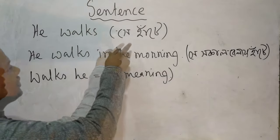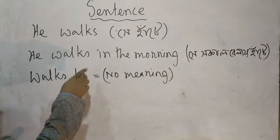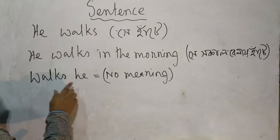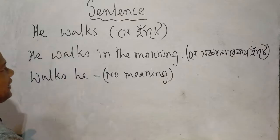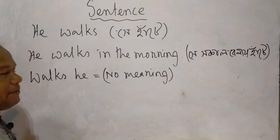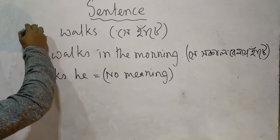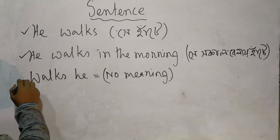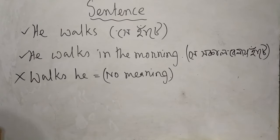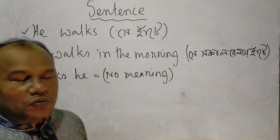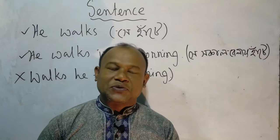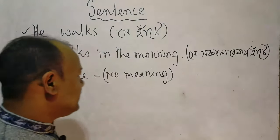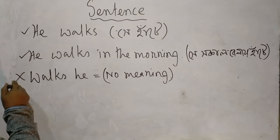'He walks in the morning.' But 'he walks he' — no meaning. That means I want to say this is a sentence, and this is a sentence, but 'he walks he' is not a sentence. So what is the reason as to why we can't say that it is a sentence?